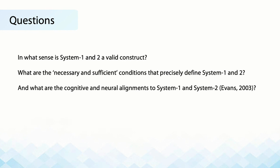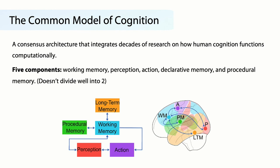To answer this, we are trying to clarify the general terms of System 1 and System 2 using the Common Model of Cognition. We're going to use this methodology to answer some very significant questions, such as: in what sense is System 1 and System 2 a valid construct? What are the necessary and sufficient conditions that precisely define System 1 and 2? And what are the cognitive and neural alignments to both systems?